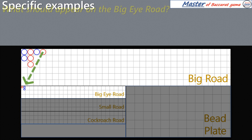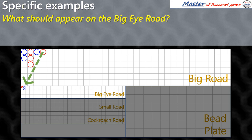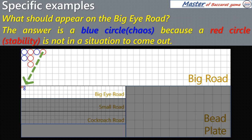What should appear on the Big Eye Road? The answer is a blue circle, because a red circle is not in a situation to come out.